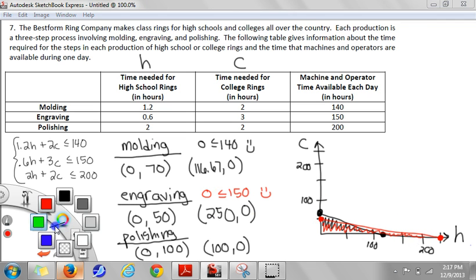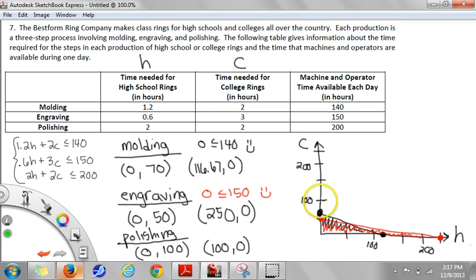And then my last one, we've got intercepts at 100 on both axes. On each axis. There we go. And if I plug in my test point again of 0,0, that gives me 0 is less than or equal to 200, which is true. So all three of these lines, I ended up having to shade underneath.